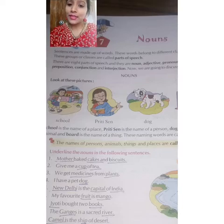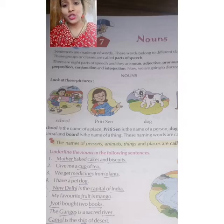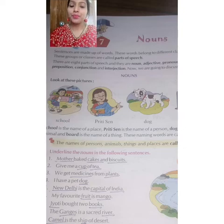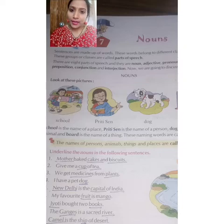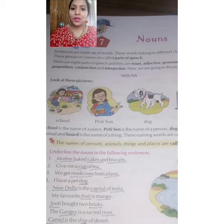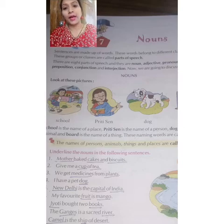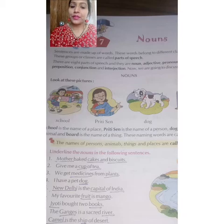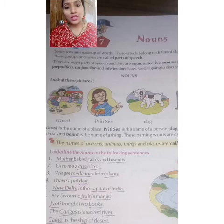This is something you have been learning since childhood — bachpan se yeh cheez padhte aa rahe ho — that noun is the name of a person, place, animal or a thing. Kisi insaan ka naam, kisi cheez ka naam, kisi animal ka naam, aur kisi jagah ka naam — all these things come under the category of noun.